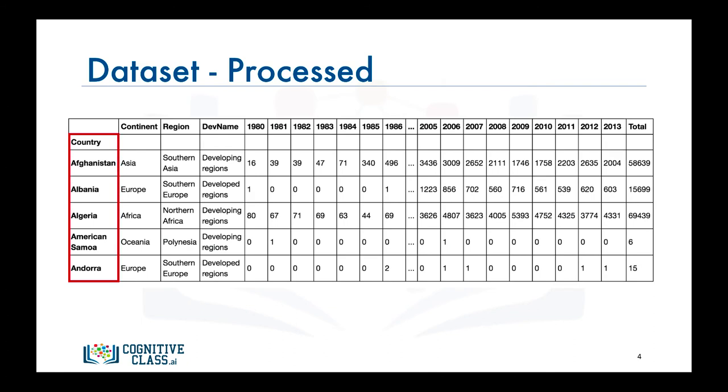Now let's process the dataframe so that the country name becomes the index of each row. This should make retrieving rows pertaining to specific countries a lot easier.